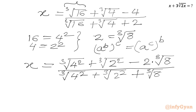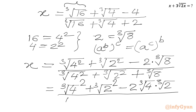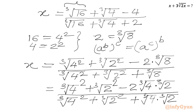We will use the exponent law: a power b, whole power c equals a power c, whole power b. So swapping exponents, I can write cube root of 4 whole squared plus cube root of 2 whole squared minus 2 times cube root of 8, and we can factor cube root of 4 times cube root of 2. Similarly in the denominator: cube root of 4 whole squared plus cube root of 2 whole squared plus cube root of 4 times cube root of 2.